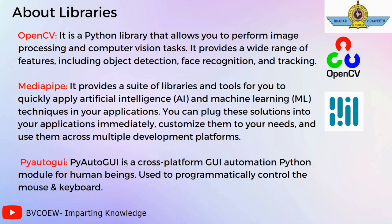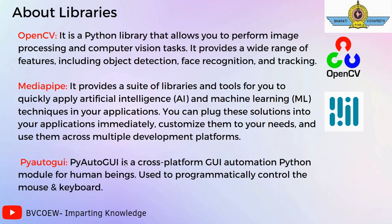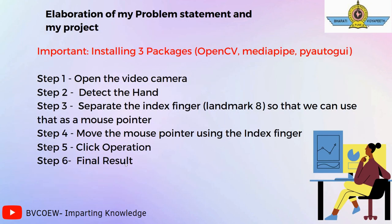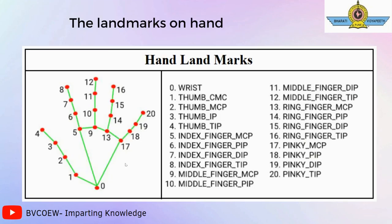PyAutoGUI is a cross-platform GUI automation Python module for human beings, used to programmatically control the mouse and keyboard. You may have noticed landmark 8 mentioned here. Landmark 8 is the index fingertip, as you can see in the image. By pressing your thumb and index finger together, you can click on the screen. These are the different landmarks visible on the screen.